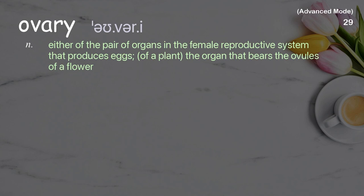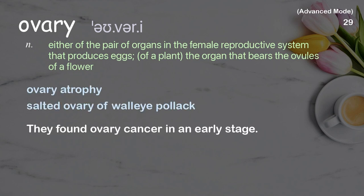Ovary: Either of the pair of organs in the female reproductive system that produces eggs; in a plant, the organ that bears the ovules of a flower. Examples: ovary atrophy, salted ovary of walleye pollock. They found ovary cancer in an early stage.